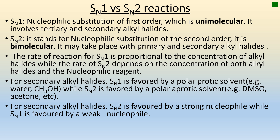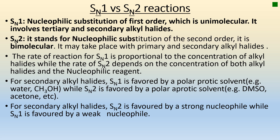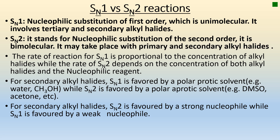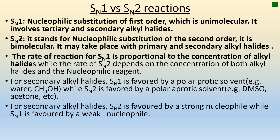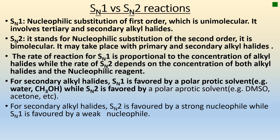SN1 vs SN2 reactions. SN1 stands for nucleophilic substitution of the first order, which is unimolecular; it involves tertiary and secondary alkyl halides. SN2 stands for nucleophilic substitution of the second order; it is bimolecular and may take place with primary and secondary alkyl halides. The rate of reaction for SN1 is proportional to the concentration of alkyl halides only, while the rate of SN2 depends on the concentration of both alkyl halides and the nucleophilic reagent. For secondary alkyl halides, SN1 is favored by a polar protic solvent — e.g., water, methanol — while SN2 is favored by a polar aprotic solvent — e.g., dimethyl sulfoxide, acetone.